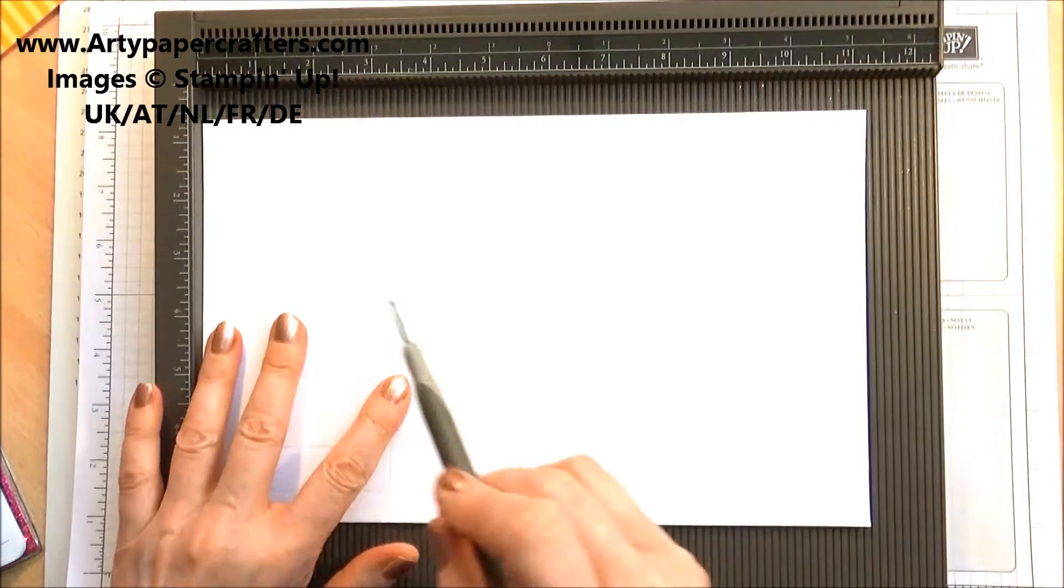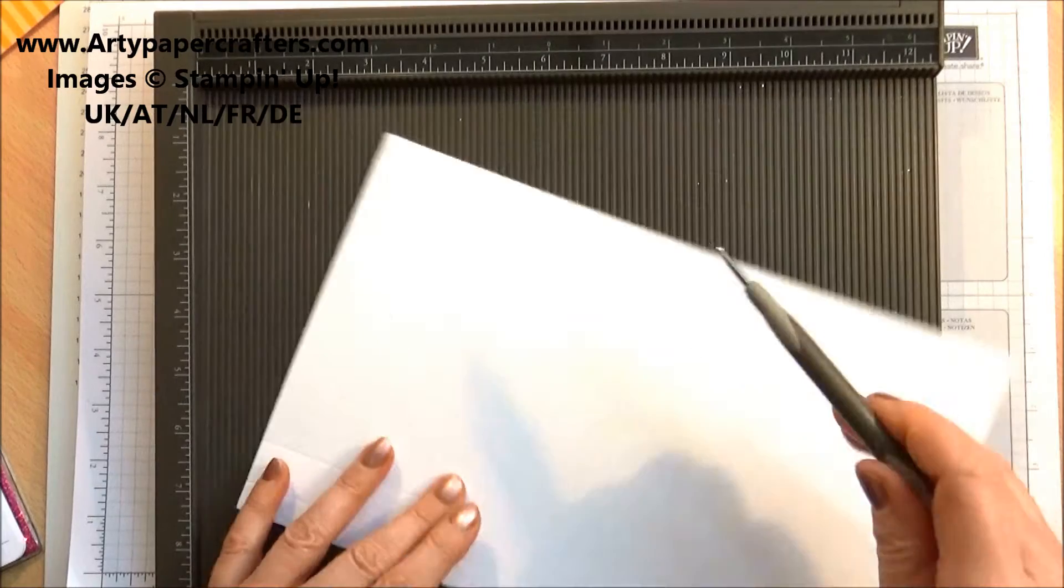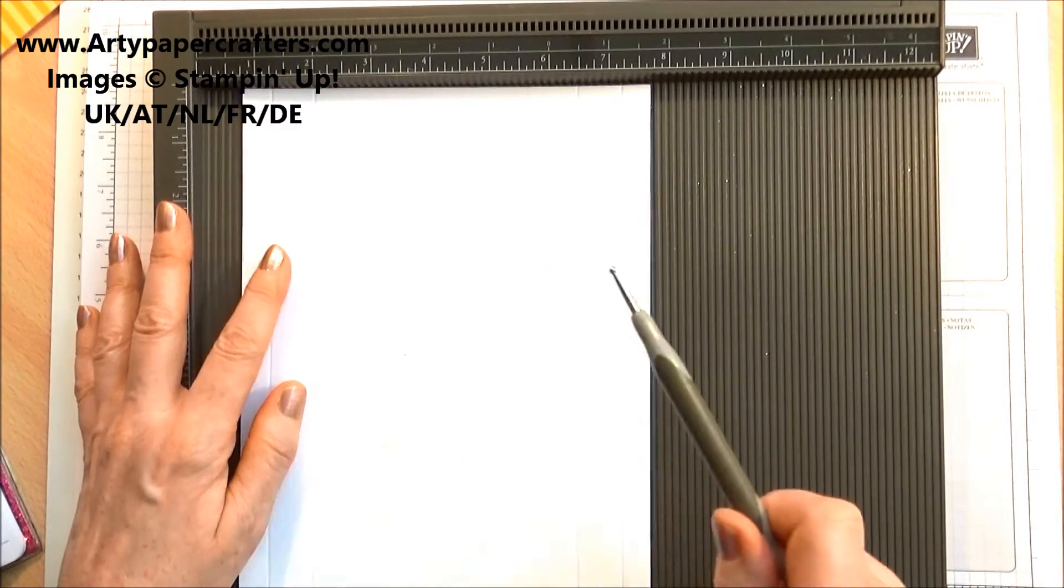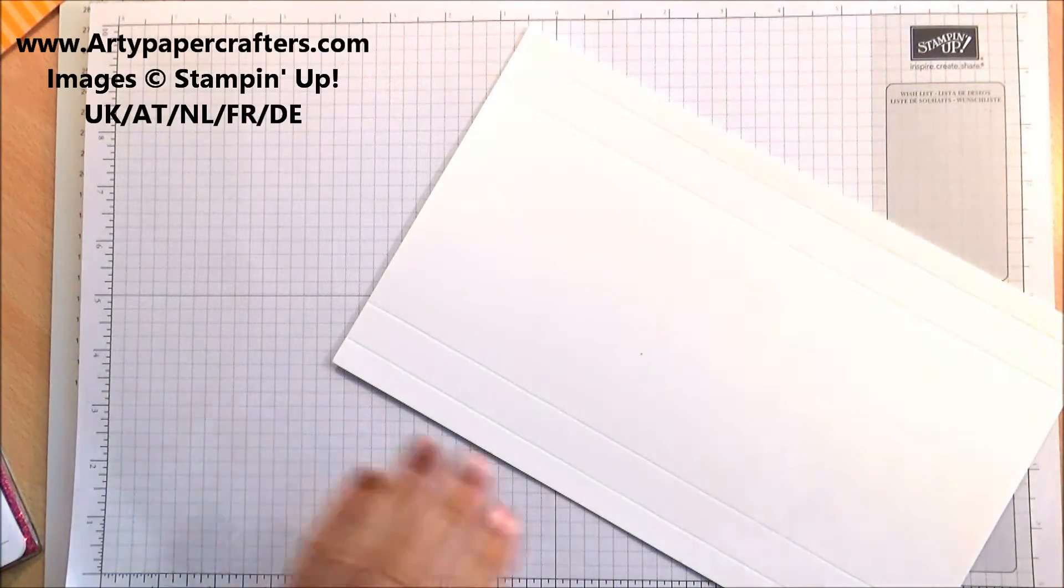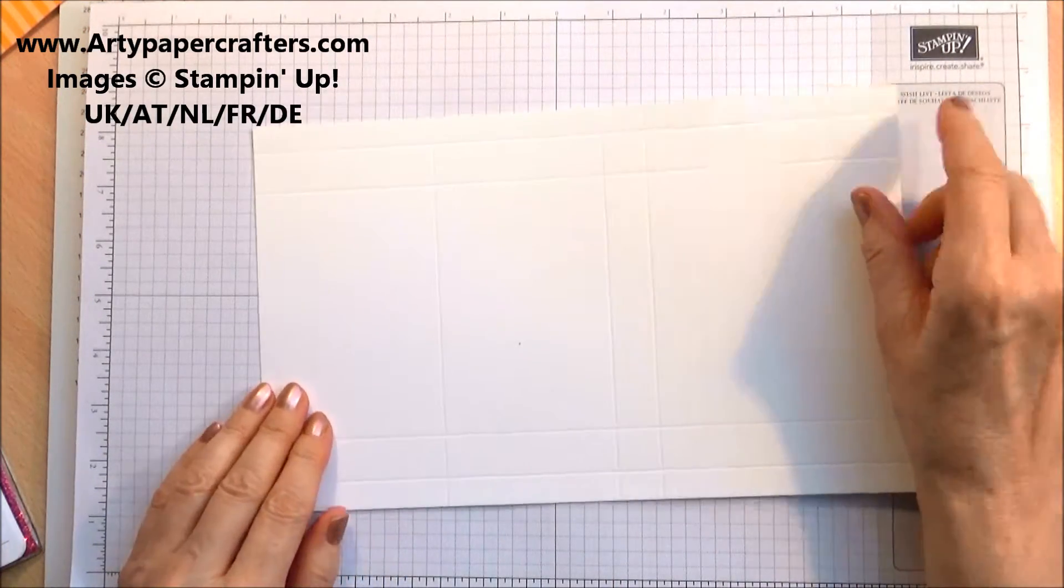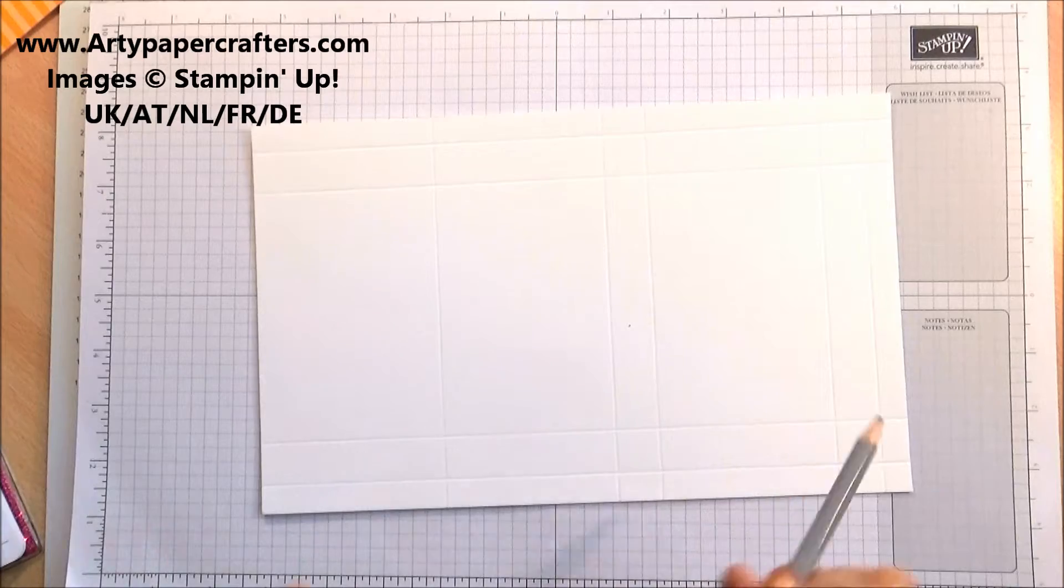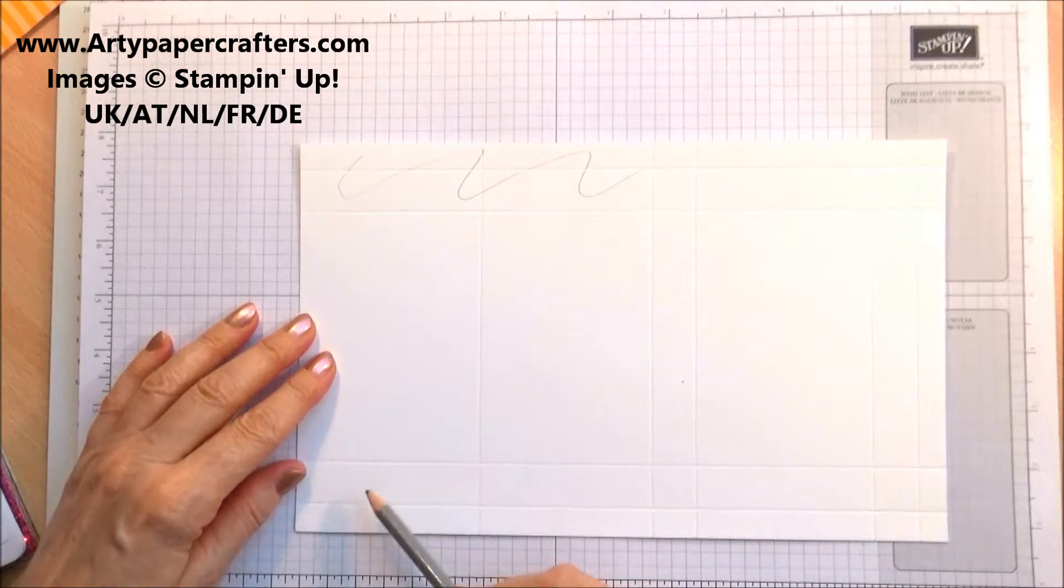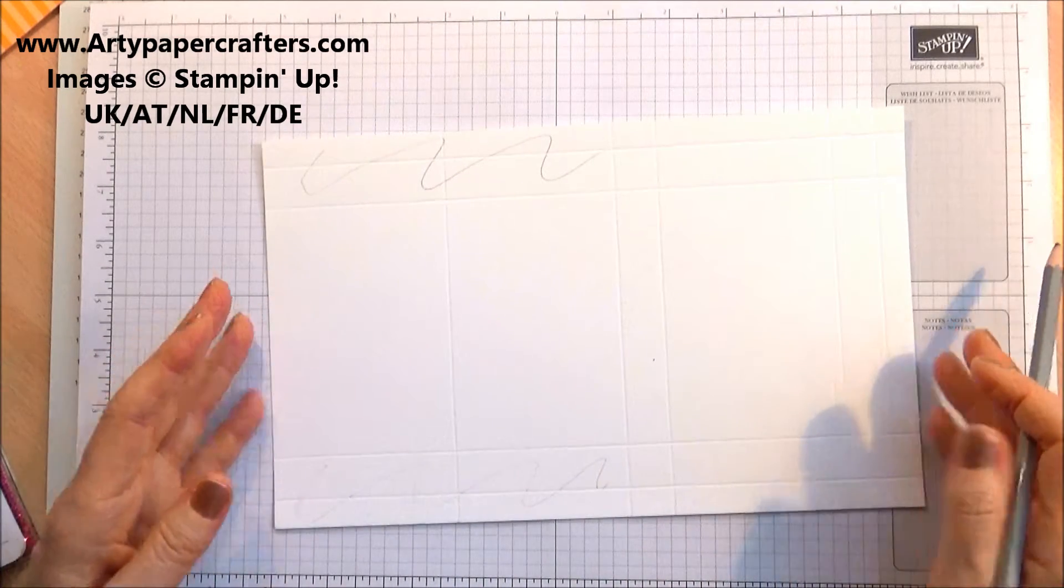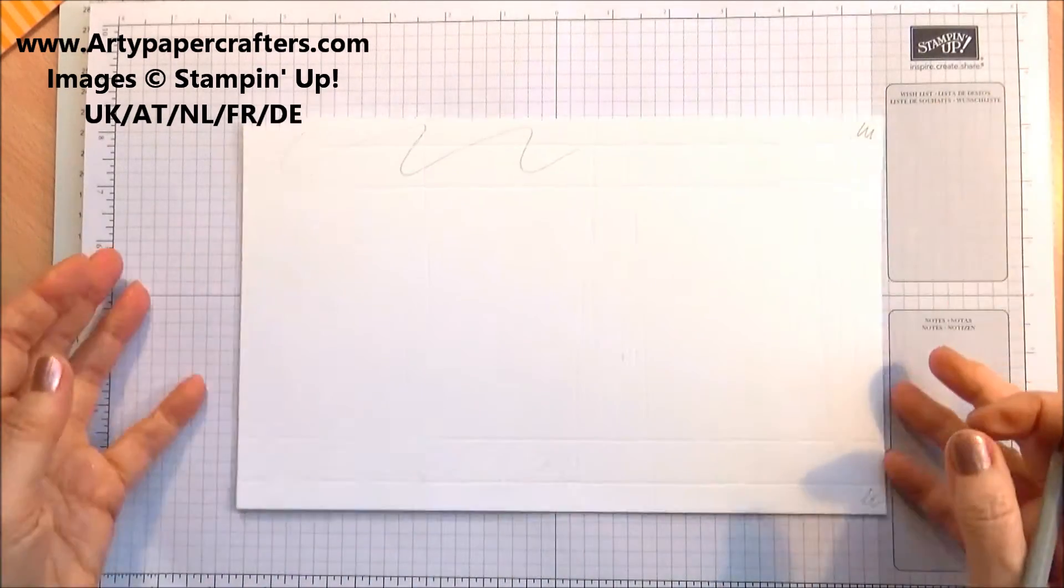So in centimeters that's eight, fifteen point five, seventeen point five, twenty-five and twenty-seven and on the short side that's one point five, three point five, fifteen and seventeen. Let's put our scoreboard away. So before we start cutting we've got our box like this and I'm going to get a pencil so that you can see the pieces that I'm going to cut away. So we are going to cut away these pieces and we're going to match it with these pieces. And we don't need that piece here or that little corner there. Okay?